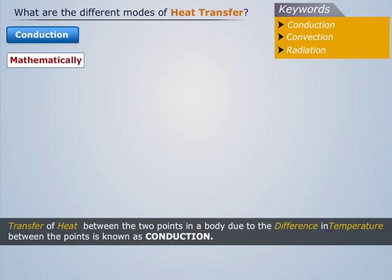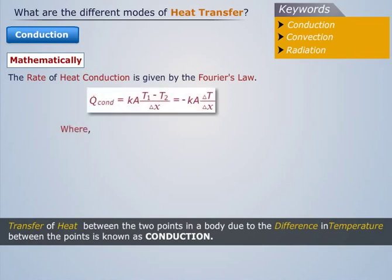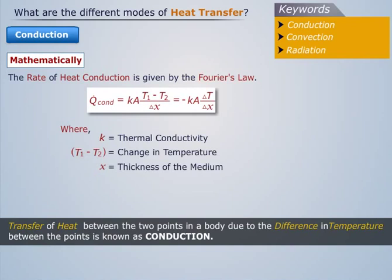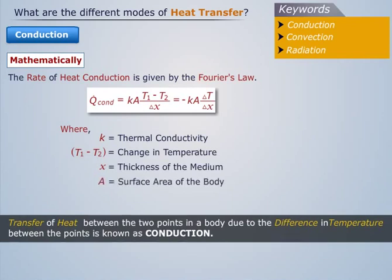Mathematically, the rate of heat conduction is given by Fourier's law. It is represented as Q = KA(T1 - T2)/X, where K is the thermal conductivity, T1 minus T2 is the change in temperature, X is the thickness of the medium, and A is the surface area of the body.